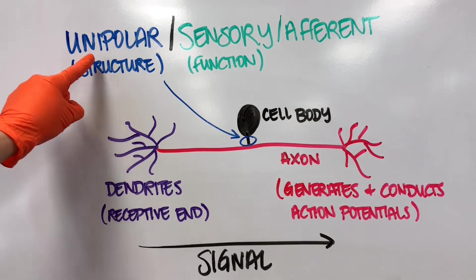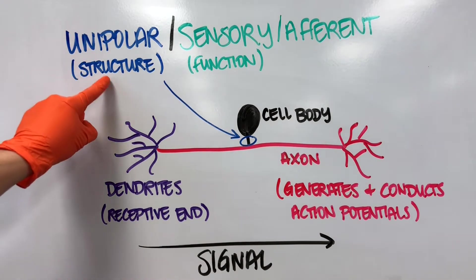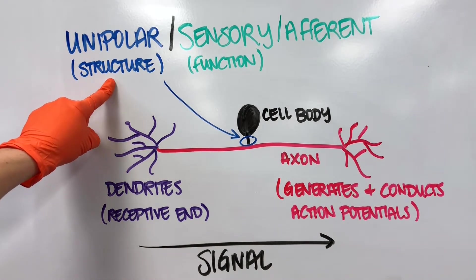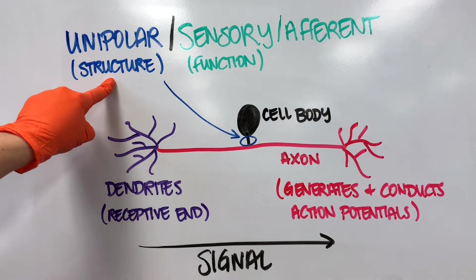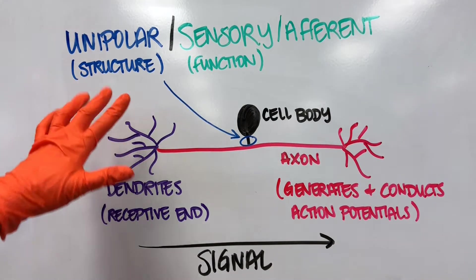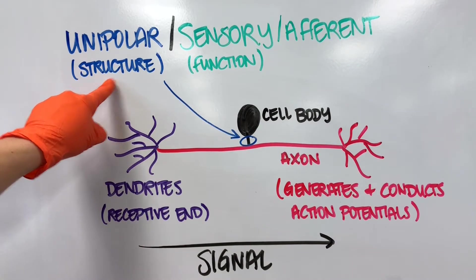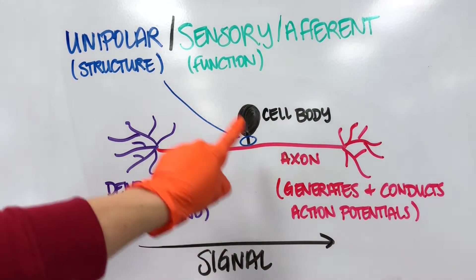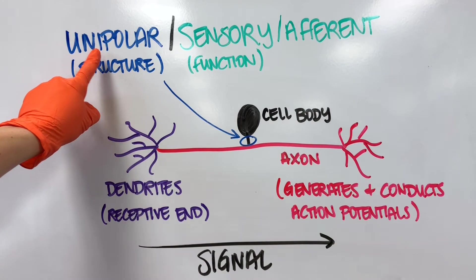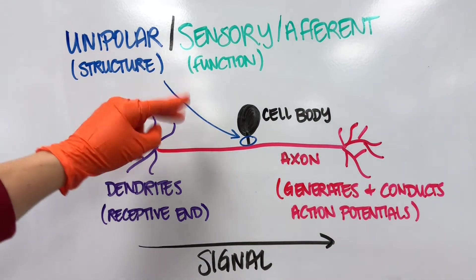The term unipolar refers to its structural classification. Remember, form follows function. Form describes the anatomy, the physical appearance. So the structural classification of a neuron that looks like this is unipolar—one pole.